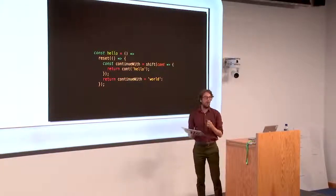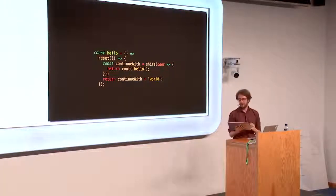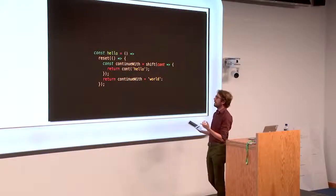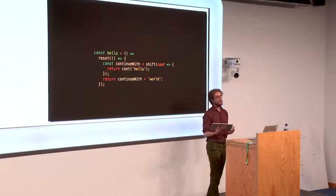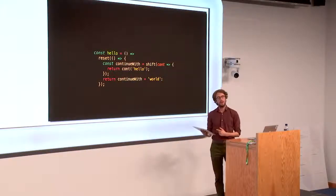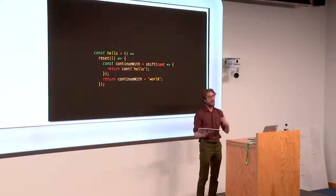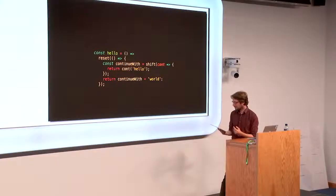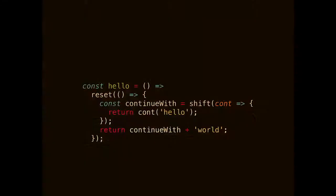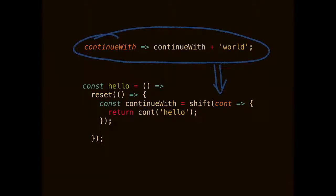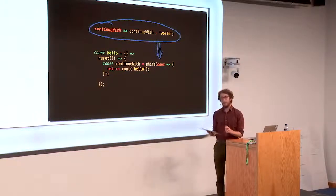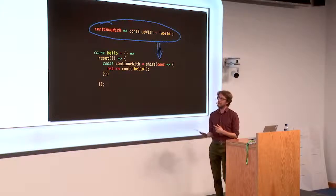So the most common operators for delimited continuations are shift and reset. And they work like this. Reset marks a delimitation. So after calling reset, at any point then, you can save a continuation. And that continuation will save the sequence of computation back to the point at which you called reset. When we call shift, a couple of things happen. The first thing is that we clear the current continuation. So that plus world, it's not run. Instead, we take that and we bind it to this cont variable. And we can then manipulate that as we like inside the body of our shift. And we're going to get a result back from it that's returned.